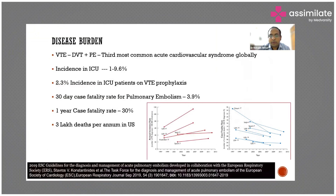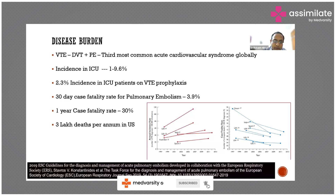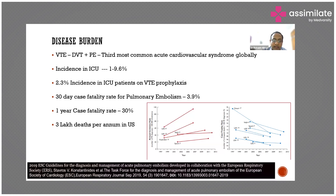Pulmonary embolism is the third most common acute cardiovascular syndrome globally, after myocardial infarction and stroke. The incidence in the ICU population is 1 to 9.7%. So if you have a 10-bedded ICU, it is likely that one patient will have venous thromboembolism. Even with pharmacological or mechanical prophylaxis for DVT, the incidence in such patients is 2.3%. The one-year case fatality rate is around 30%, and the one-month case fatality rate is around 3.9%. In the US — data for India is not available — there are about 300,000 deaths attributable to pulmonary embolism per year.